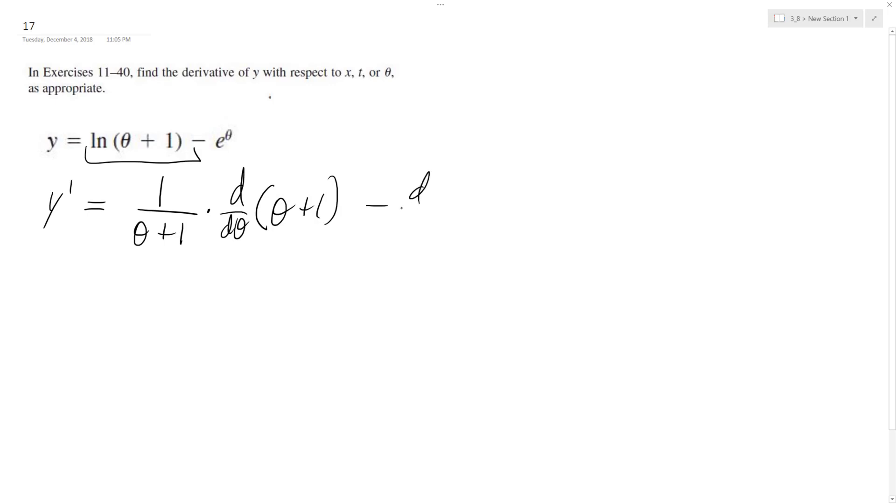and then the derivative of e raised to theta is the derivative of theta on the outside and then e raised to theta. So what we get is 1 over theta plus 1,